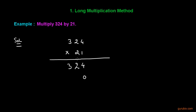4 times 2 means 8; 2 times 2 is 4; 3 times 2 is 6. Now we shall add these two numbers.